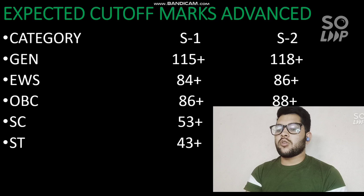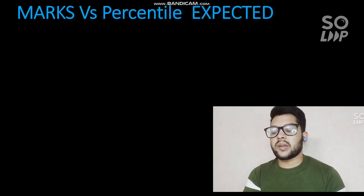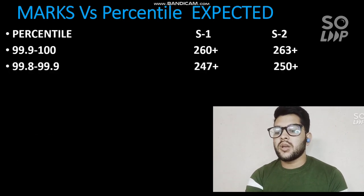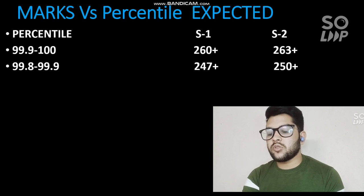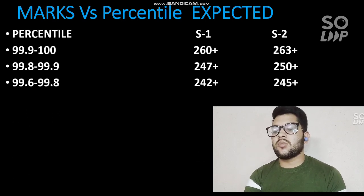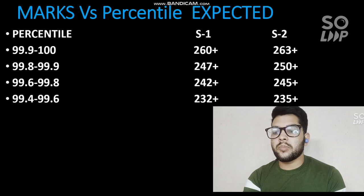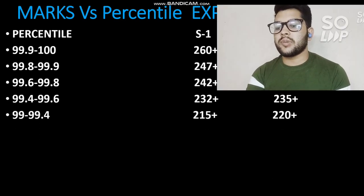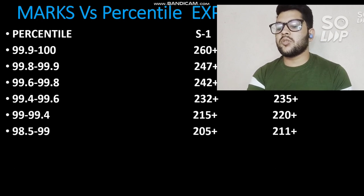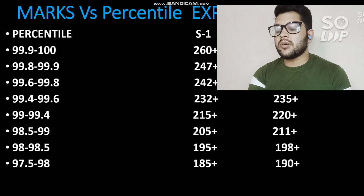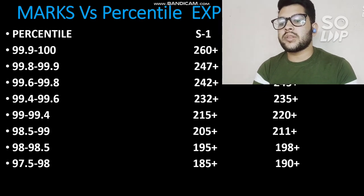Now for marks versus percentile expected for 27th August Shift 1: for 99.9 to 100 percentile, marks would be 260+; for 99.8 to 99.9 percentile, 247+; for 99.6 to 99.8, it's 242+; for 99.4 and above, 222+; for 99 and above, 215+; for 98.5, 205+; for 98 and above, 195+; for 97.5 and above, 185+.